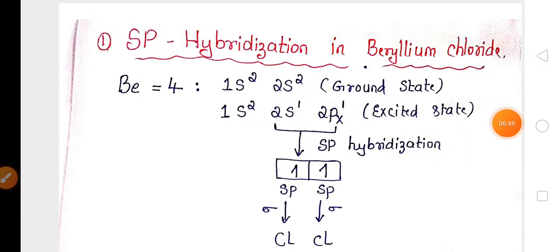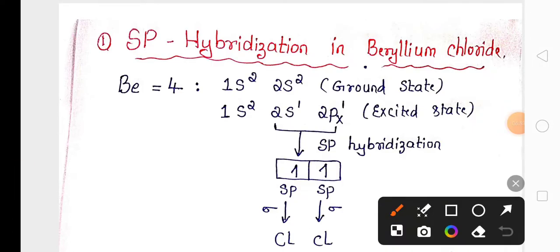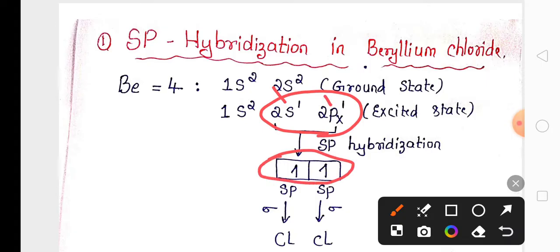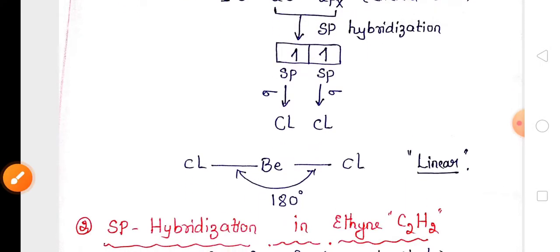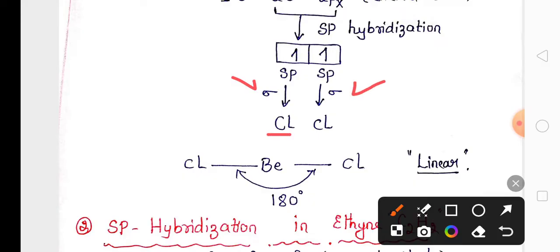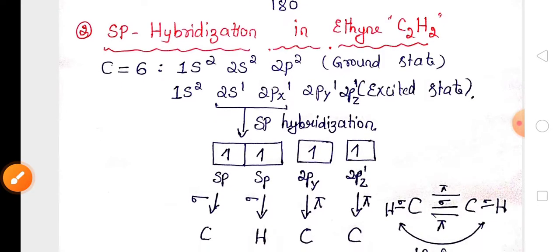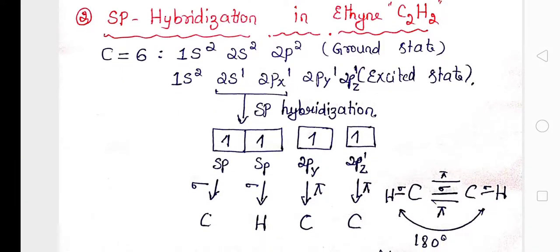For sp hybridization, the example is beryllium chloride (BeCl2). In the excited state, electrons in the s orbital and p orbital undergo hybridization to produce two sp hybrid orbitals. Each sp hybrid orbital axially overlaps with the p orbital of chlorine to form a sigma bond. The bond angle in BeCl2 is 180° and the geometry is linear. Another example of sp hybridization is ethyne (C2H2).